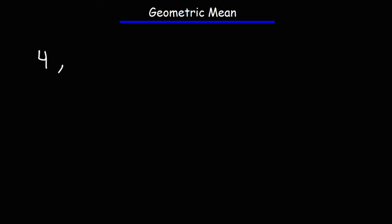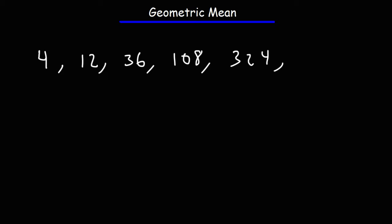We need to know what a geometric sequence is. Let's say we have the number 4. If we multiply 4 by 3, we get 12. If we multiply 12 by 3, we'll get 36. If we multiply 36 by 3, we get 108. 108 times 3 is 324, and 324 times 3 is 972. So 3 is known as the common ratio of the geometric sequence, because that's the number we need to multiply the previous term to get the next term.